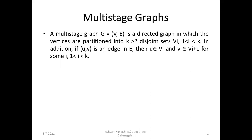A multi-stage graph G = (V, E) is a directed graph in which the vertices are partitioned into k > 2 disjoint sets Vi, where 1 ≤ i ≤ k. Additionally, if (u, v) is an edge in E, then u belongs to Vi and v belongs to Vi+1 for some i. This means each edge goes from one stage to the very next stage.